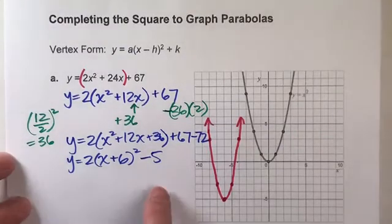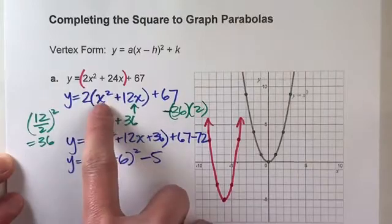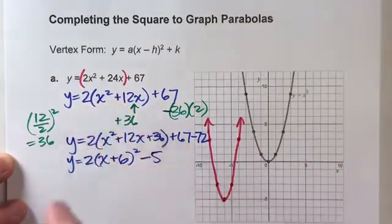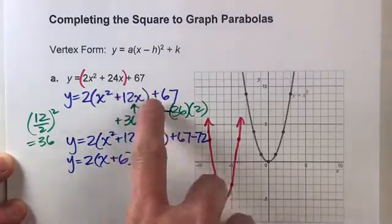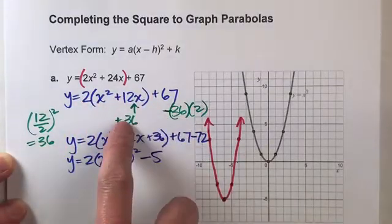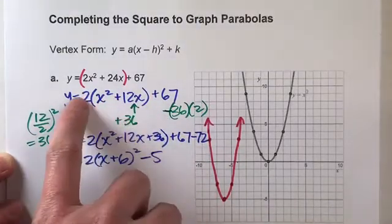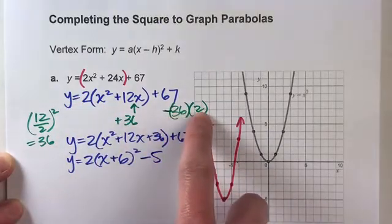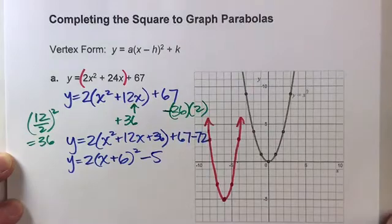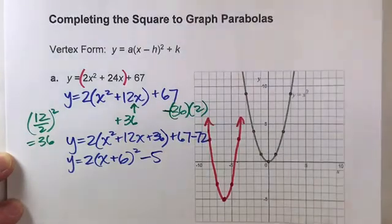So the key to this whole thing is completing the square inside this parentheses. But remembering to keep your equation balanced, we have to subtract off that amount. And remembering that because it's in parentheses and being multiplied by 2, we have to subtract off the amount times 2. Let's see a second example so that way we can get the hang of it.